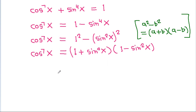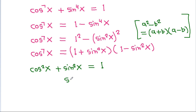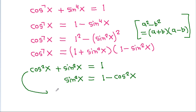Now, since cos²x plus sin²x equals 1, we have sin²x equals 1 minus cos²x, and also 1 minus sin²x equals cos²x.